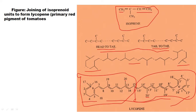The numbering goes: 1, 2, 3, 4, 5, 6, 7, 8, 9, 10, 11, 12, 13, 14, 15, 16, 17, 18, 19, 20 on one side, and 1′, 2′, 3′, 4′, 5′ and so on on the other side. This is the nomenclature and numbering system for carotenoid structures.